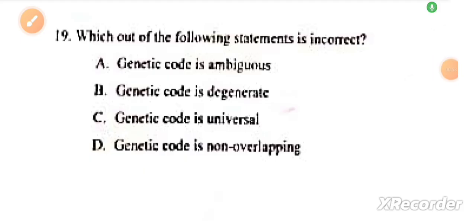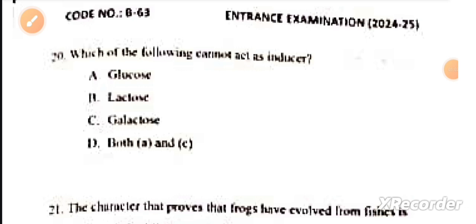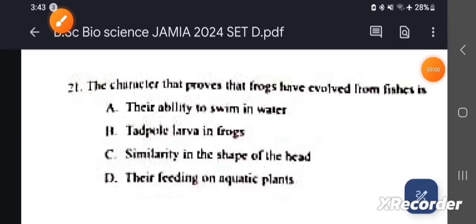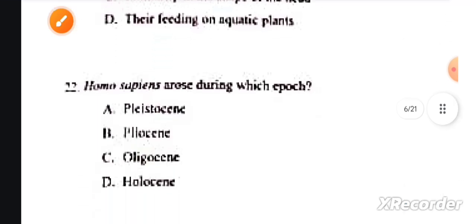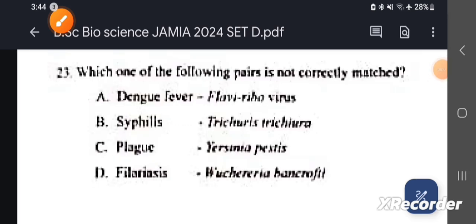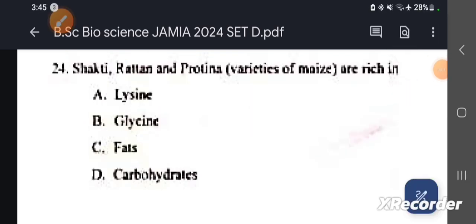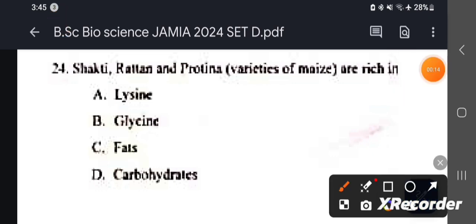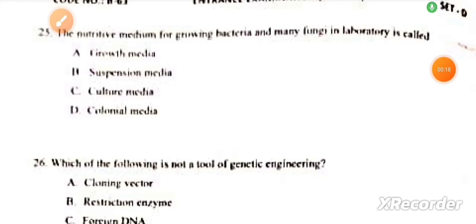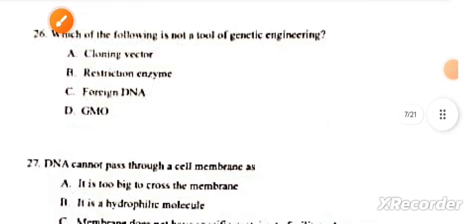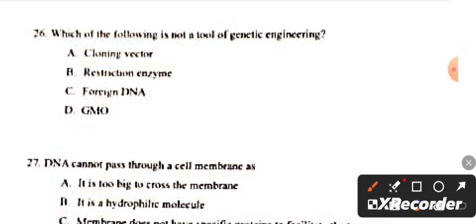Question number 19: Which of the following statement is incorrect? This answer is A. Question number 20: Which of the following cannot act as an inducer? This answer is glucose and galactose. Question number 21: The character that proves that frogs have evolved from fishes is? This answer is B, tadpole larvae. Next: Homo sapiens arose during? This answer is D. Question number 23: Which of the following is not correctly matched? This answer is B. Question number 24: The Shakti, Ratan, and Proteina varieties of maize are rich in? This answer is A, lysine. Question number 25: The nutritive medium for growing bacteria and many fungi in the laboratory is called? This answer is C, culture media. Next: Which of the following is not a tool of genetic engineering? This answer is B, GMO.